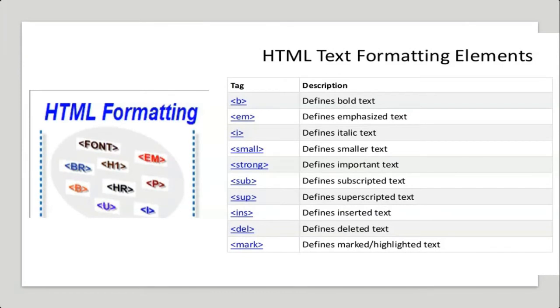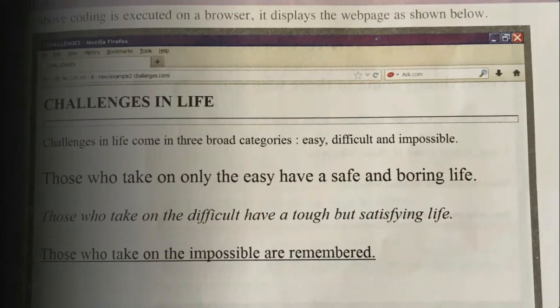Heading tags are used to set apart document text and section subtitles. The heading tag levels are H1, H2, H3, H4, H5, and H6, each having its own appearance. From the example you can see the different sizes of heading tags.